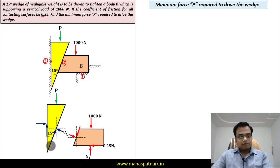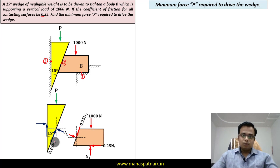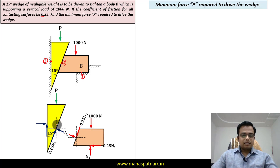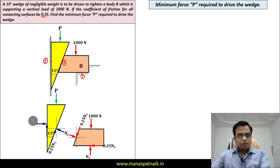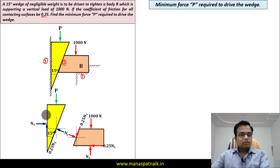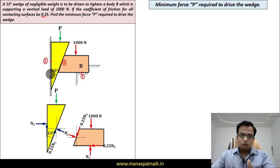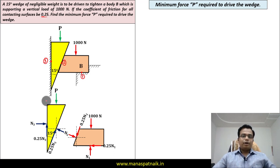Finally, at point of contact three — the wedge with the wall — we have normal N3, and since the wedge is trying to move in the downward direction, friction acts in the upward direction, equal to 0.25N3.